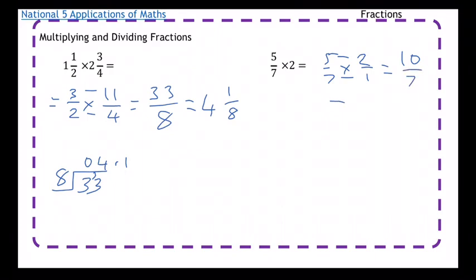So it's just 10 over 7. Again, if you're asked to change that into a mixed number, it's 1 with 3 over 7 left over.